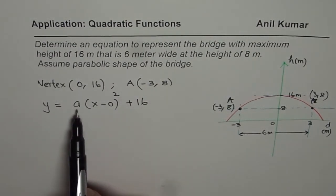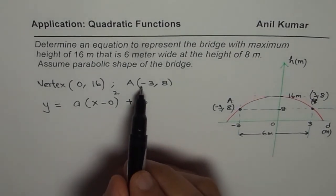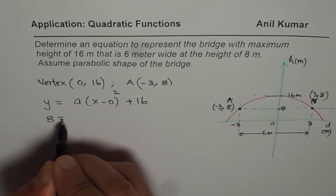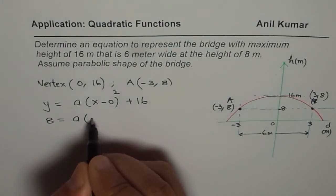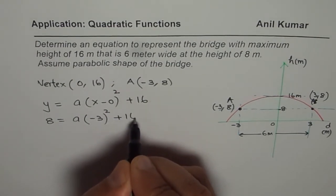Now to find the value of A, we can use the coordinate points, which is minus 3 for x and 8 for y. So I can write this as 8 equals A times minus 3, 0 is 0, squared plus 16. And we can solve for A.